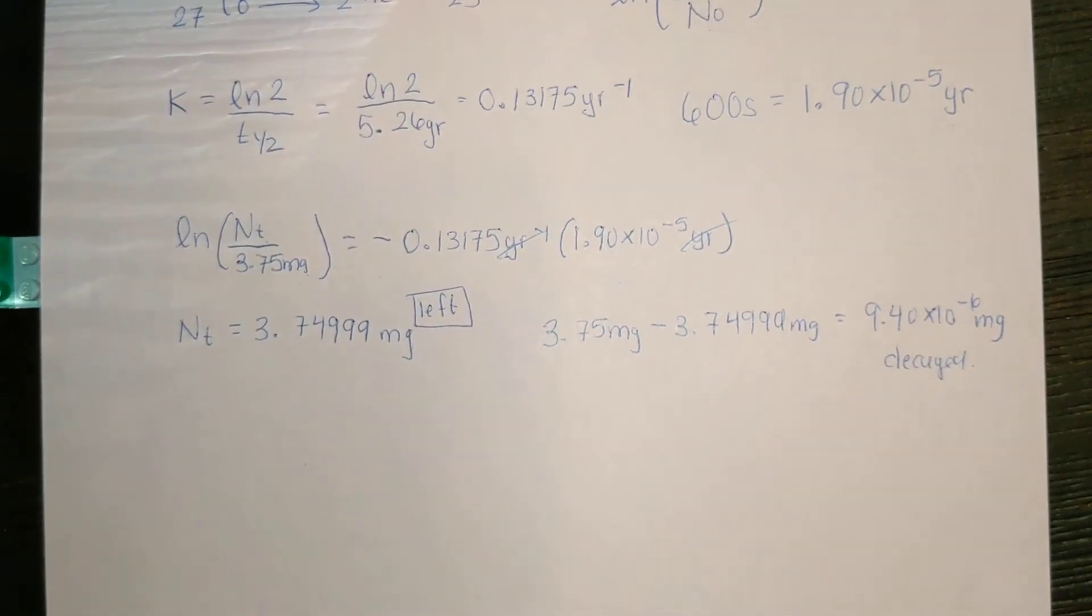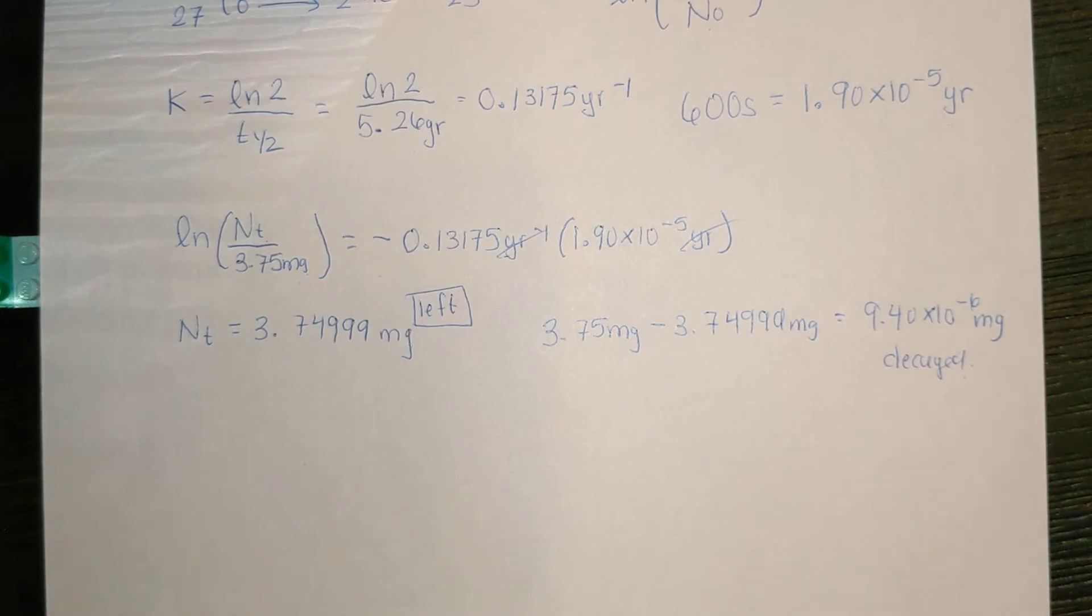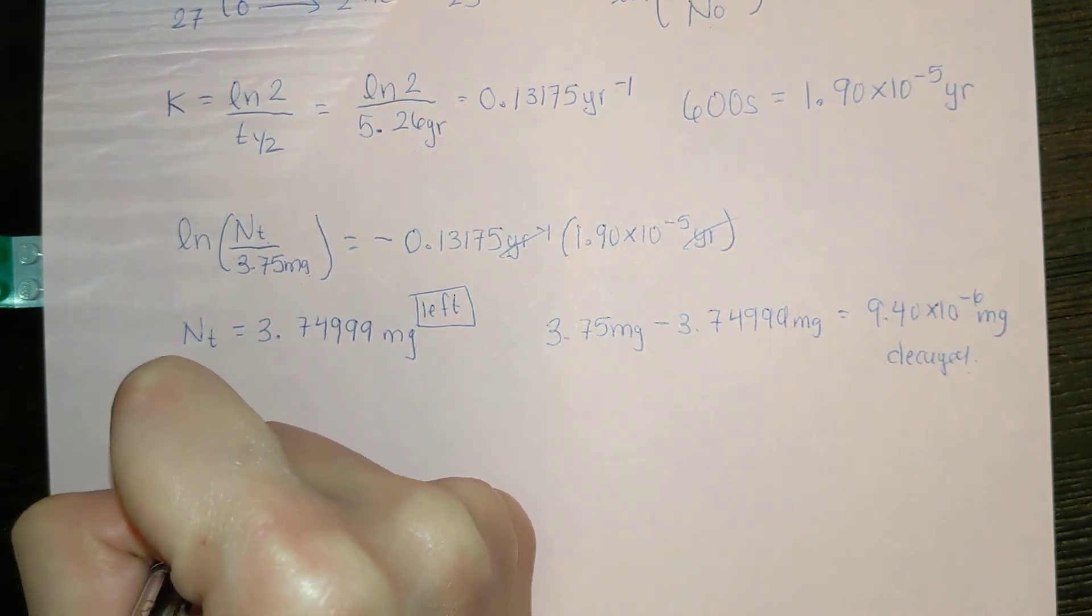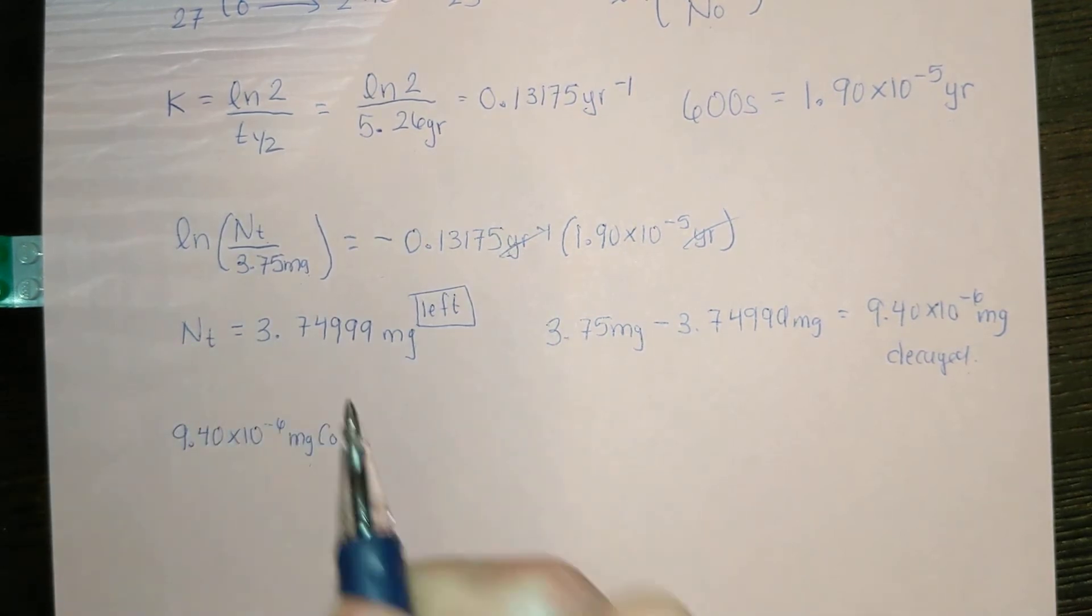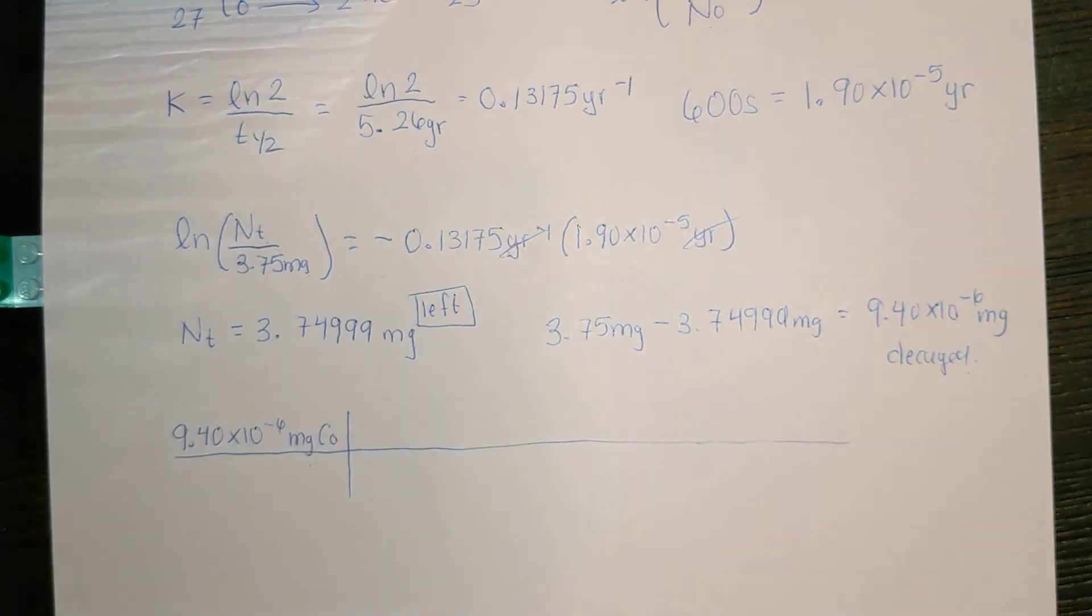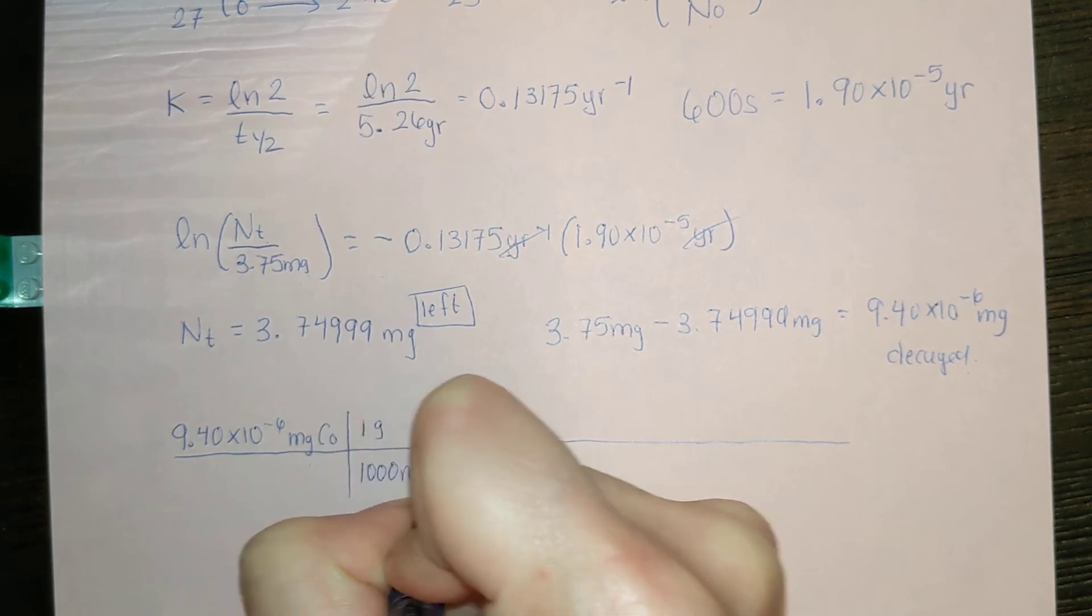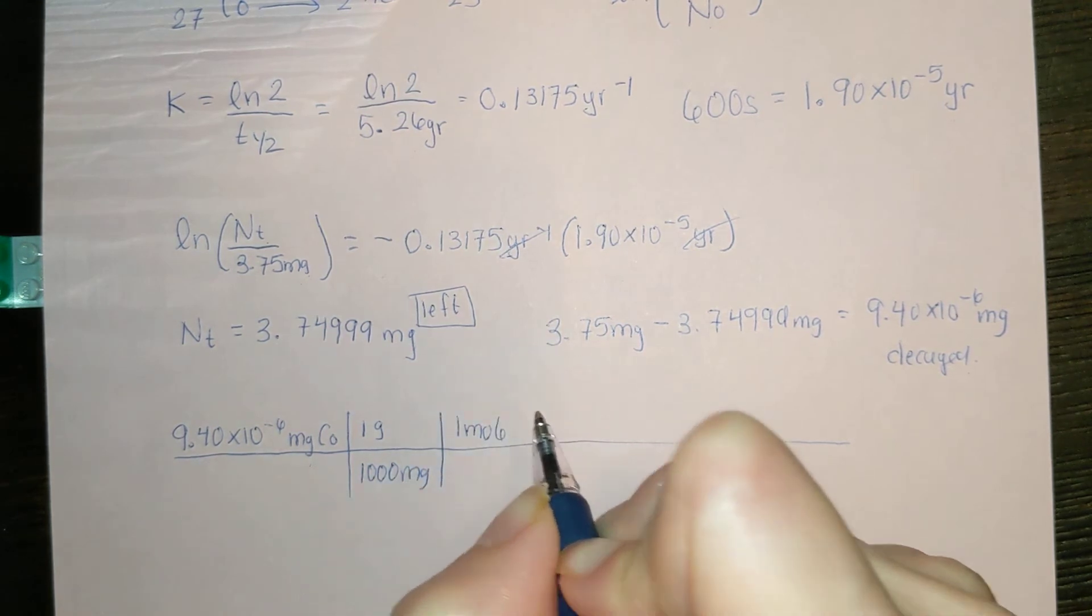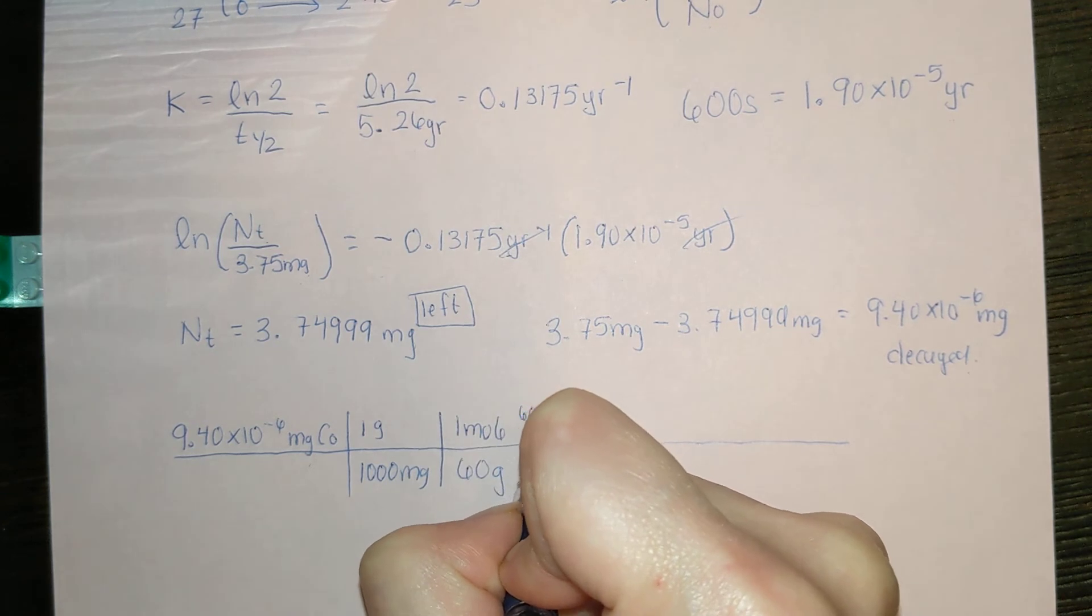Our difference in mass is what has decayed for our cobalt. Now that we have that, it's just a little bit of stoichiometry. We're going to turn the mass of cobalt decayed into just number of helium atoms, using some basic stoichiometry. We'll start 9.40 times 10 to the minus 6 milligrams of cobalt. Then just again a nice stoichiometry, 1 gram per 1,000 milligrams.